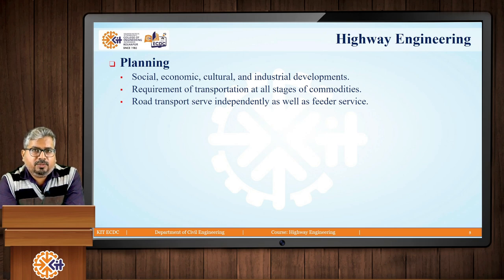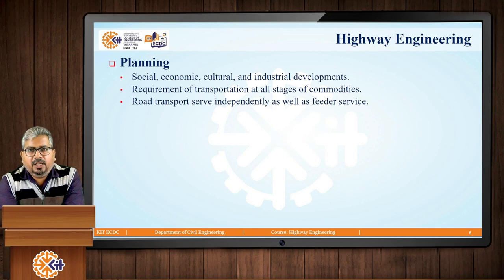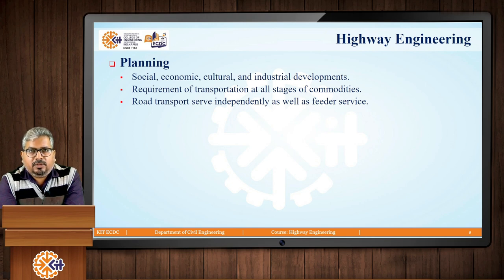Then we have the requirement of transportation at all stages of commodities. For example, consider a farm where we have the raw material. This raw material has to be transported from the farm to the processing facility or mill, and once processed, it has to be sent to distribution centers, and then from there to outlets where it reaches the consumers.